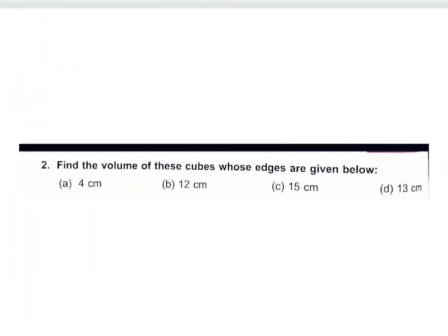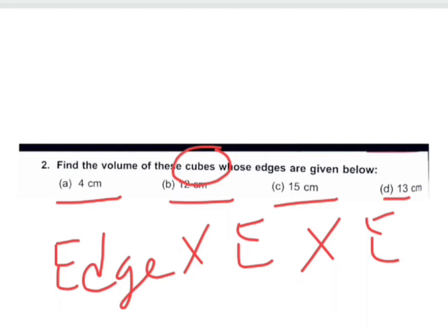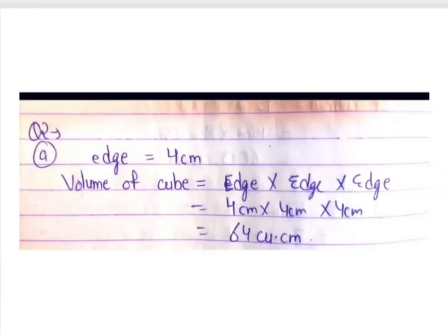In question two, we find the volume of cubes. Volume of a cube is edge × edge × edge — we multiply the edge by itself three times. In part A, the edge is 4 centimeters. We write the formula: edge × edge × edge.